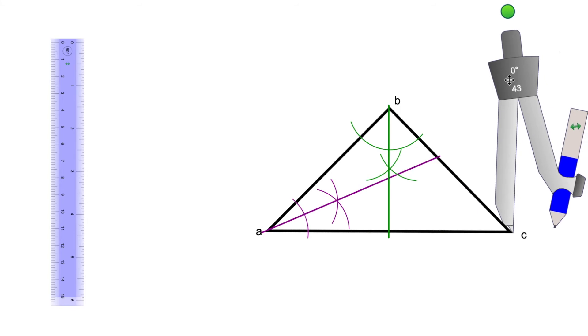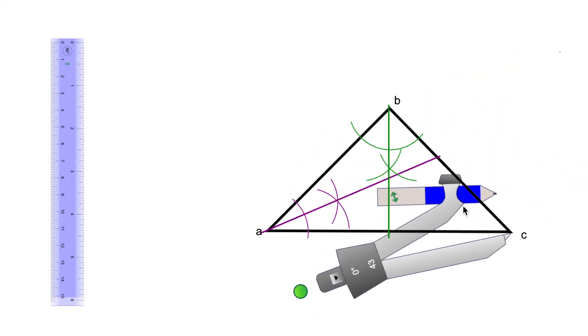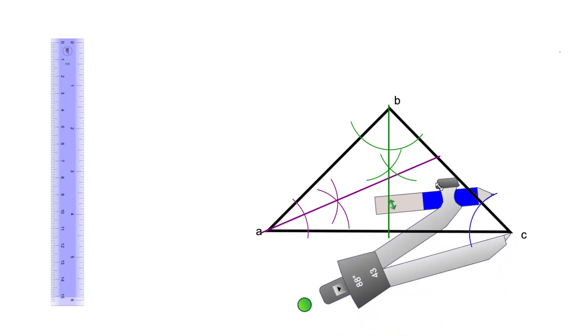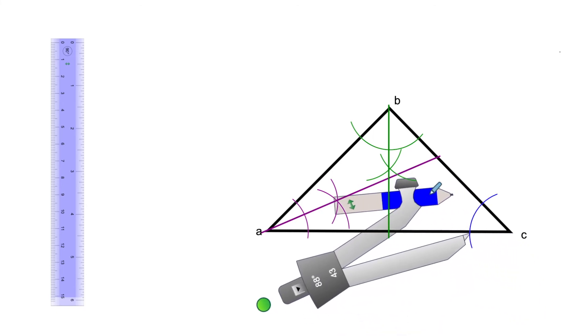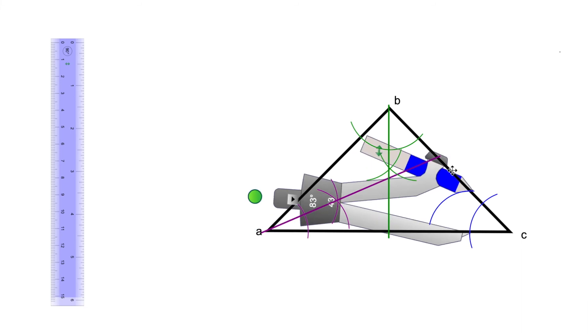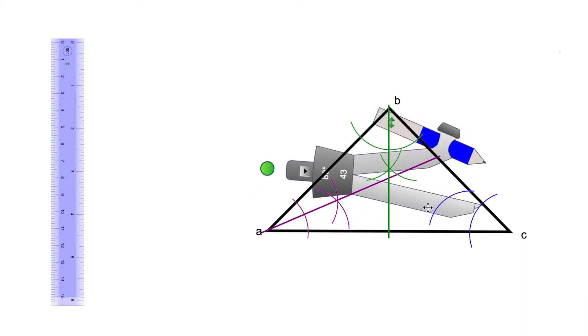Now I'll trace the bisector of vertex C. Again, I'll grab my compass and draw half an arc. From those two points that the arc divided the triangle, I'll trace one arc from one side and another arc from the other side.